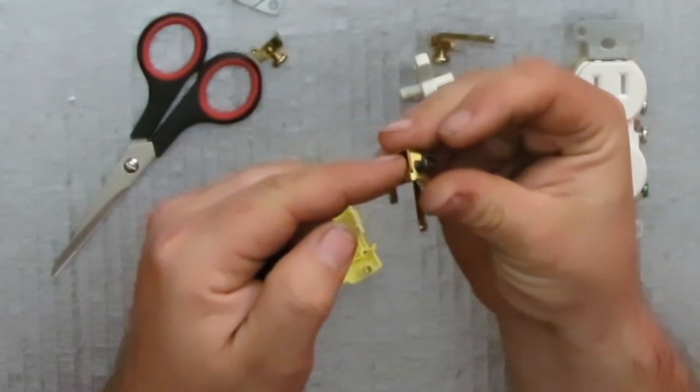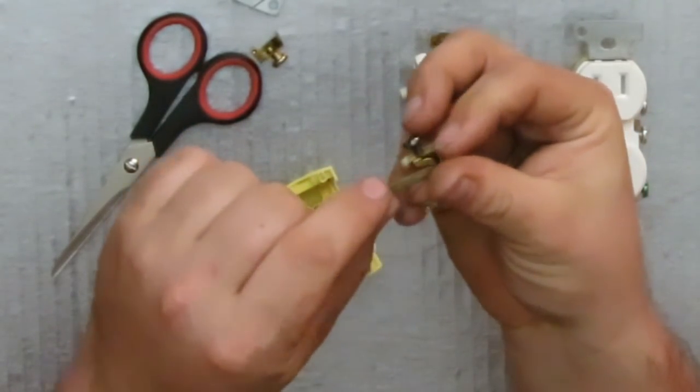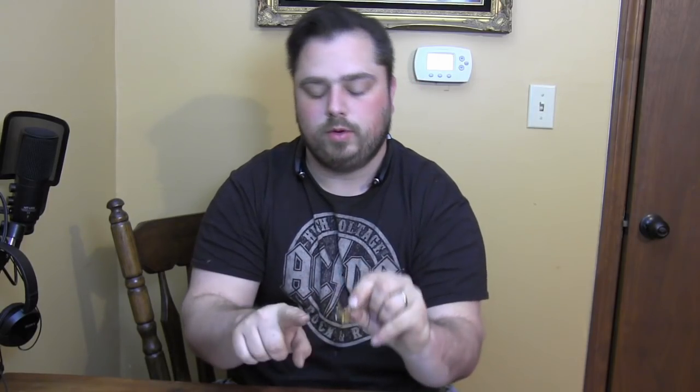And it of course has your stab in, your screw, and then two points where it can make contact with one side or the other.